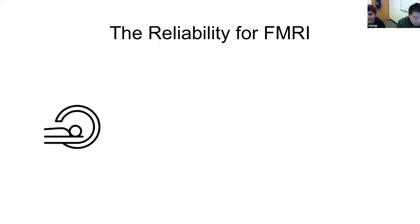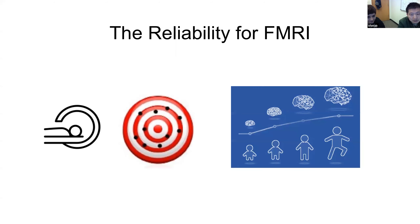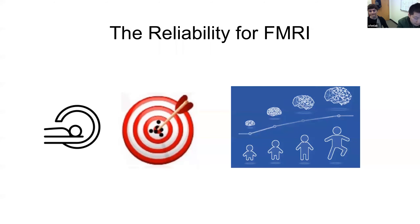All these factors can be a problem when it comes to understanding development, because if our assessment is not correct, then we cannot fully understand the development. Because reliability provides an upper bound for measurement validity, in order to use fMRI to understand memory development, we want to ensure that the reliability is high.